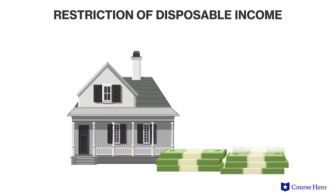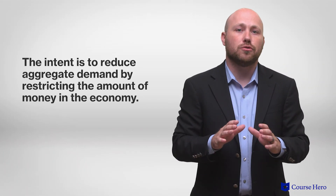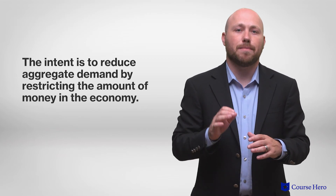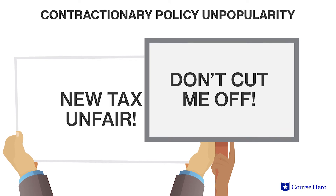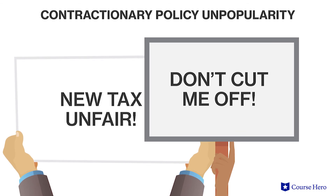Government purchases might be cut to reduce business profits, providing a disincentive to retain and hire workers. Income tax increases likewise restrict the amount of disposable income that households have available to spend on consumer goods and encourage saving. Higher corporate tax rates limit business investment and expansion. Whatever measure a government takes, the intent is to reduce aggregate demand by restricting the amount of money in the economy. Because contractionary policies involve tax increases and cuts to government spending on purchases and welfare programs, contractionary fiscal policies are generally politically unpopular.